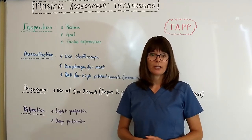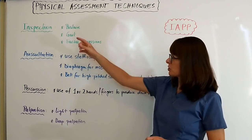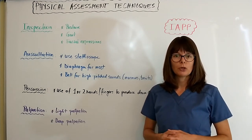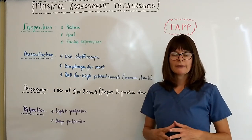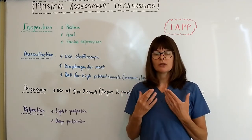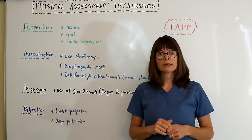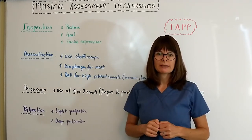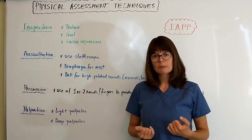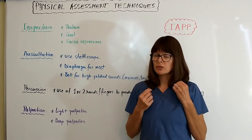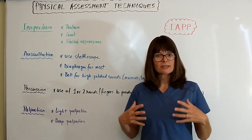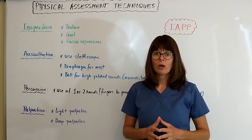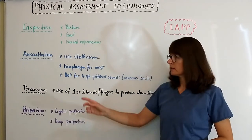The first technique is Inspection, and this is something you do every day whether you're in nursing school or not. You observe and look at other people — their facial expressions, body posture, overall pain level, gait, and how they are doing overall. Do they look sad or angry? When you move on to inspecting hair color, consistency, or skin color to look for rashes, that comes into the field of view right away. Inspection is always the first step.